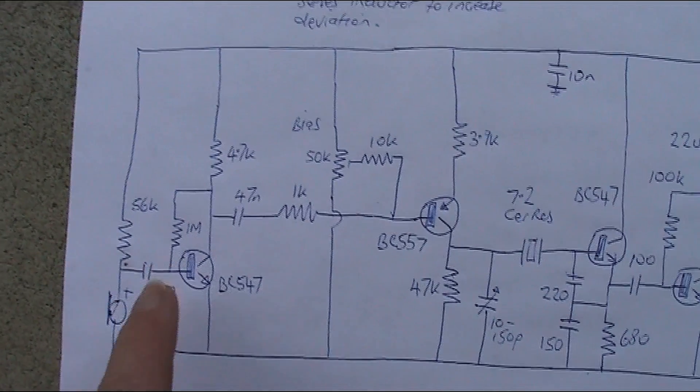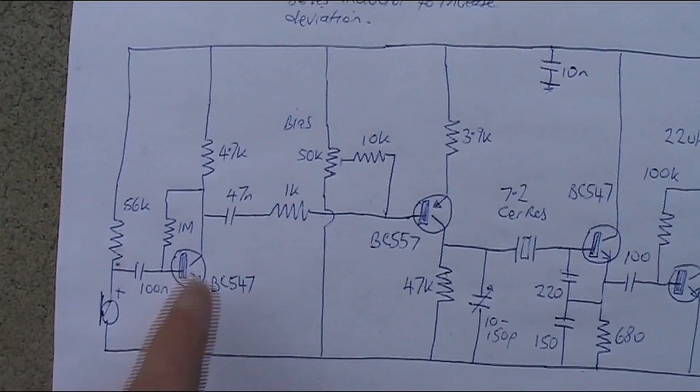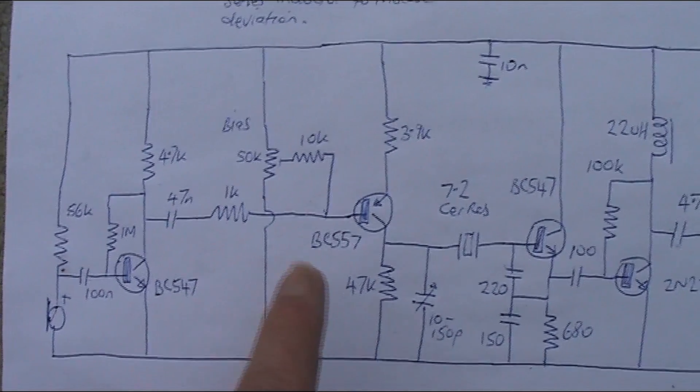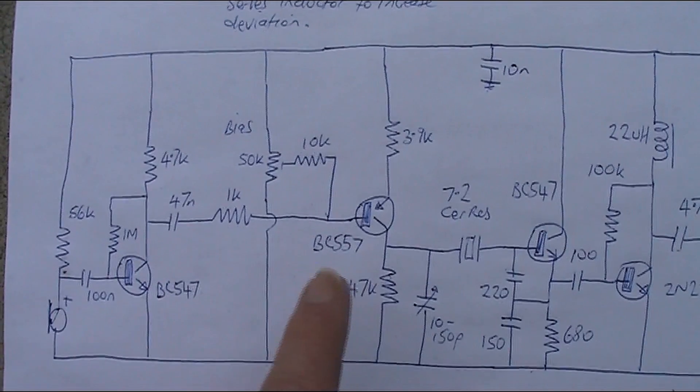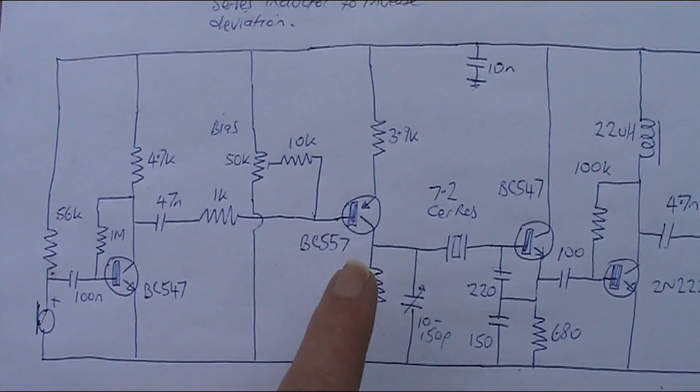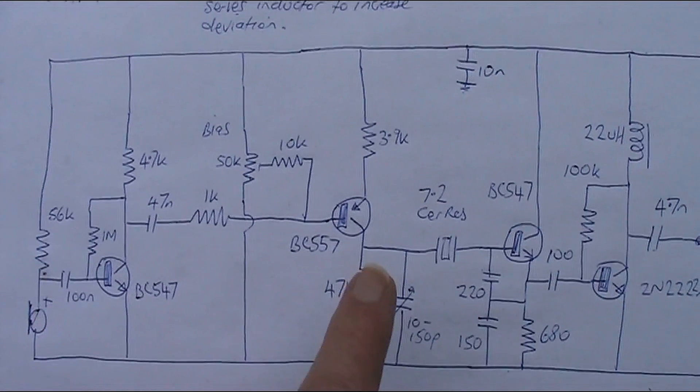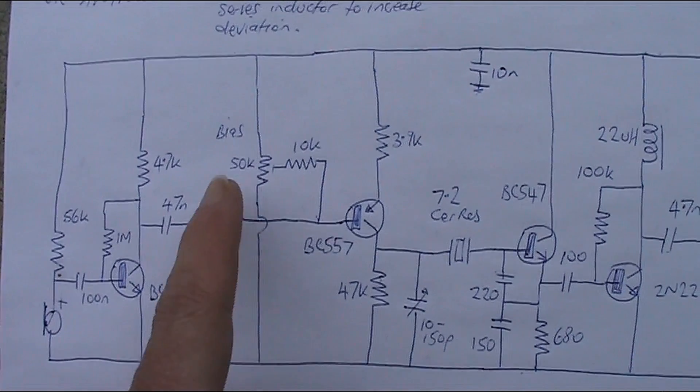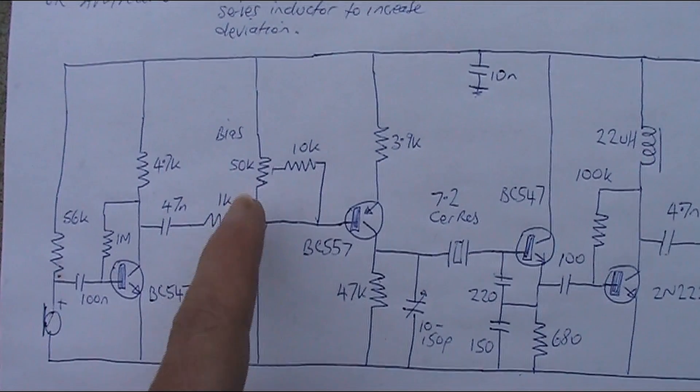Zooming in on the circuit, quick description again. The microphone amplifier - don't think I've made any changes from before. The FM modulator, this varies the capacitance, so that allows you to achieve a bit of frequency shift in sympathy with the audio from the microphone.